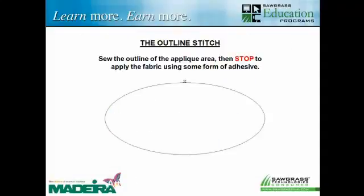For those of you who haven't done applique, I want to give you the basics. When we're doing applique, the first step is that we sew the outline of the applique area, which is typically a running stitch. In this case, you see an oval on the screen — a running stitch that goes around indicating where the fabric is going to go. Then we stop and apply the fabric using some form of adhesive. That fabric is cut out — whether by hand, laser, or a CAD cut system — so that it fits into that template outline.